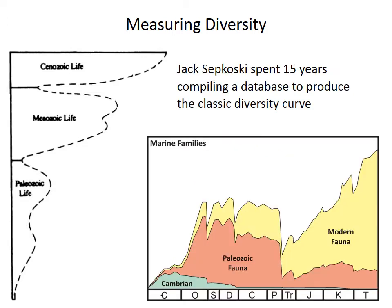More recently, in the 70s and the 80s, Jack Sepkoski and others took a more modern look at diversity, compiling a huge amount of information to produce this curve of marine family-level diversity. This famous Sepkoski curve has raised a number of interesting questions about diversity and controls on diversity.